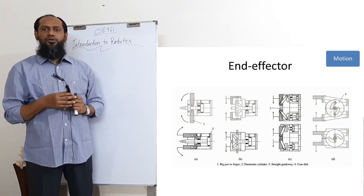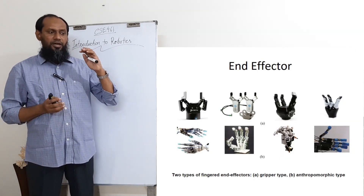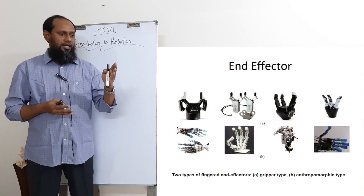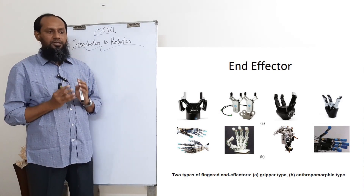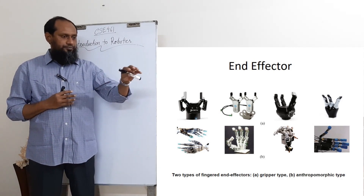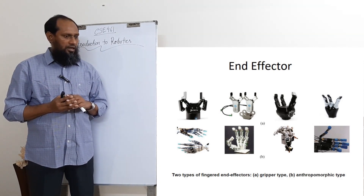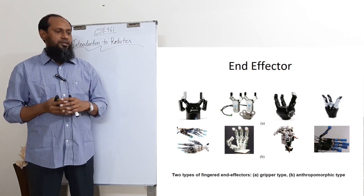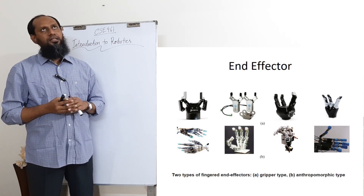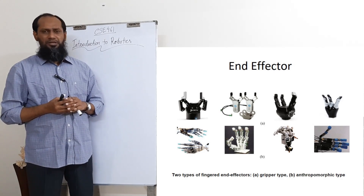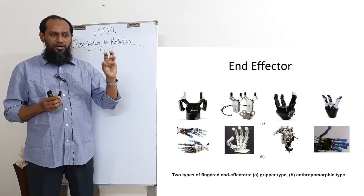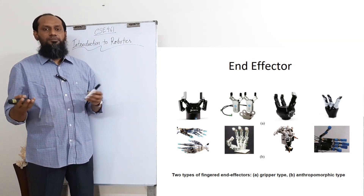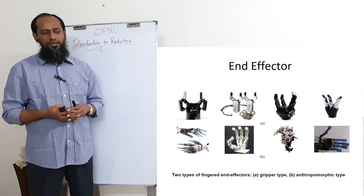There are very professional end effectors available on the market. The first and third ones come from a company called Robotiq, which sells these items. They are very expensive — when we tried to acquire a three-finger robotic end effector, they were asking around three lakh taka. Even after requesting a university research discount, they did not provide one, which shows there is a strong market for these products.